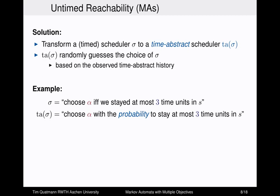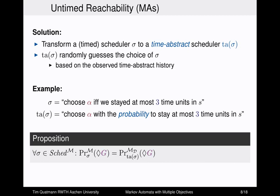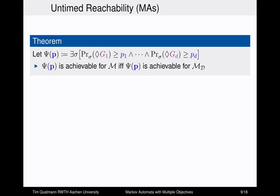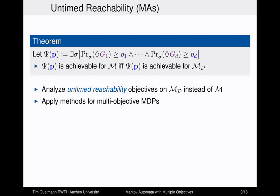This leads to a proposition: untimed reachability is preserved under the underlying MDP — the probability to reach G in the Markov automaton under sigma equals the probability to reach G in the underlying MDP under TA(sigma). Lifting this to multiple objectives gives the following theorem: if P is achievable in the Markov automaton then P is also achievable in the underlying MDP. Therefore, we can do our multi-objective analysis on the underlying MDP instead of the Markov automaton.